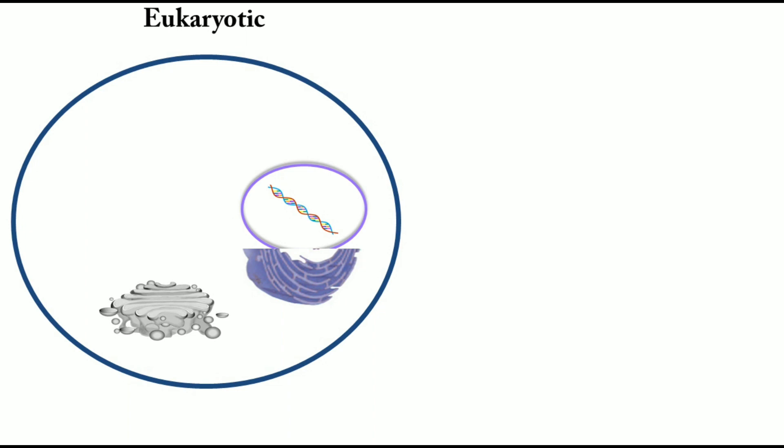The Golgi body is the site where proteins are targeted. The Golgi body can send proteins to the particular site where they should remain — for example, a protein located in the plasma membrane is directed by the Golgi body to the plasma membrane, or to the cytoplasm, nucleus, and so on.